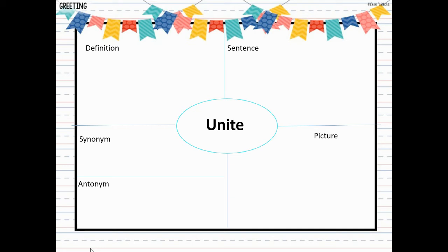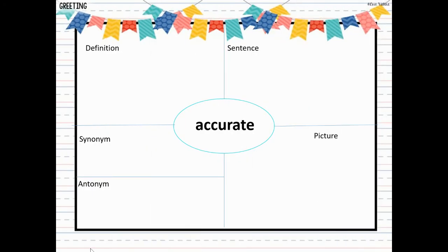Our next word for this week is unite — U-N-I-T-E. Unite is also a verb; it is an action and it means to come together. When we came together for testing, we were united. When you meet up with your family, you unite or come together. So our word unite is a verb and it means to come together.